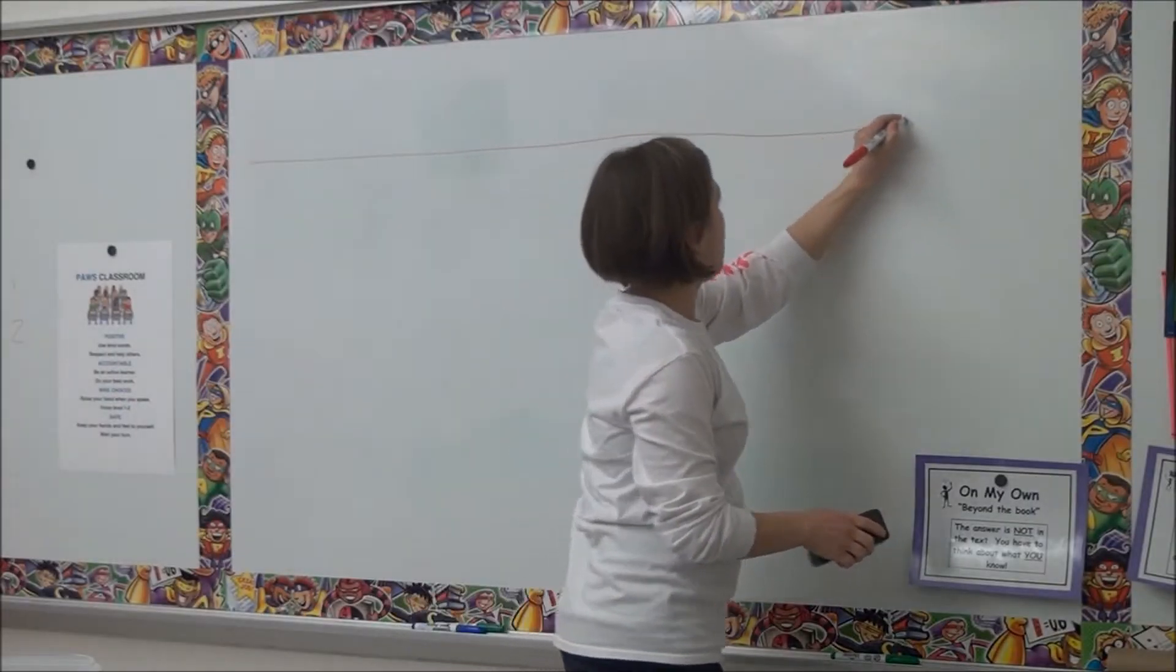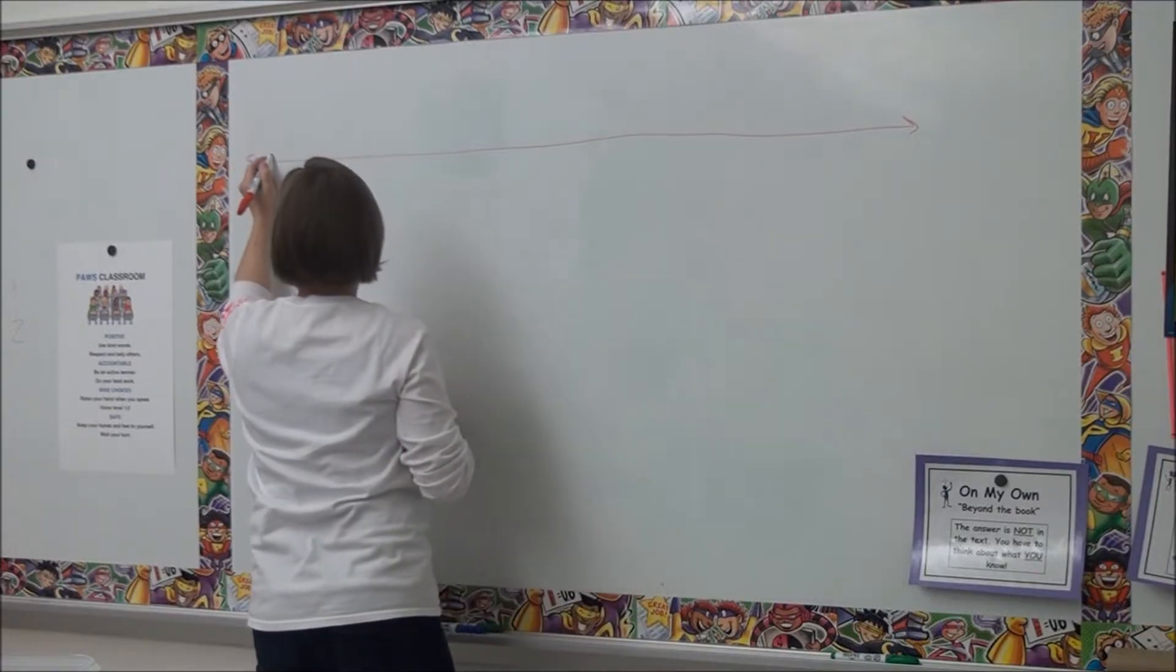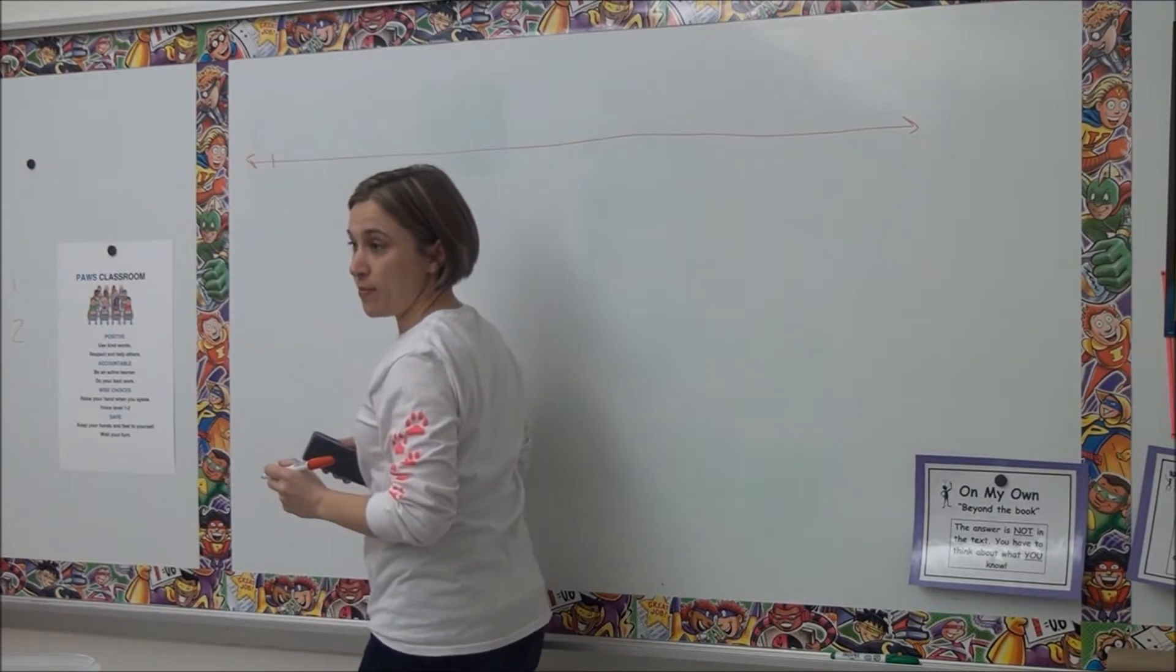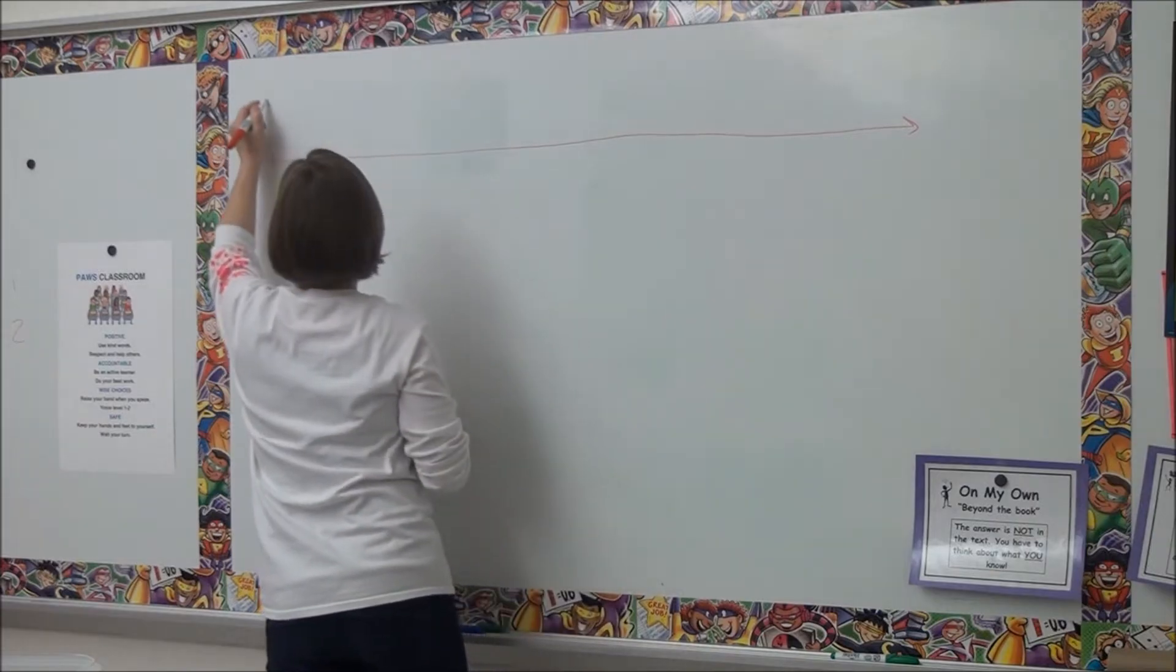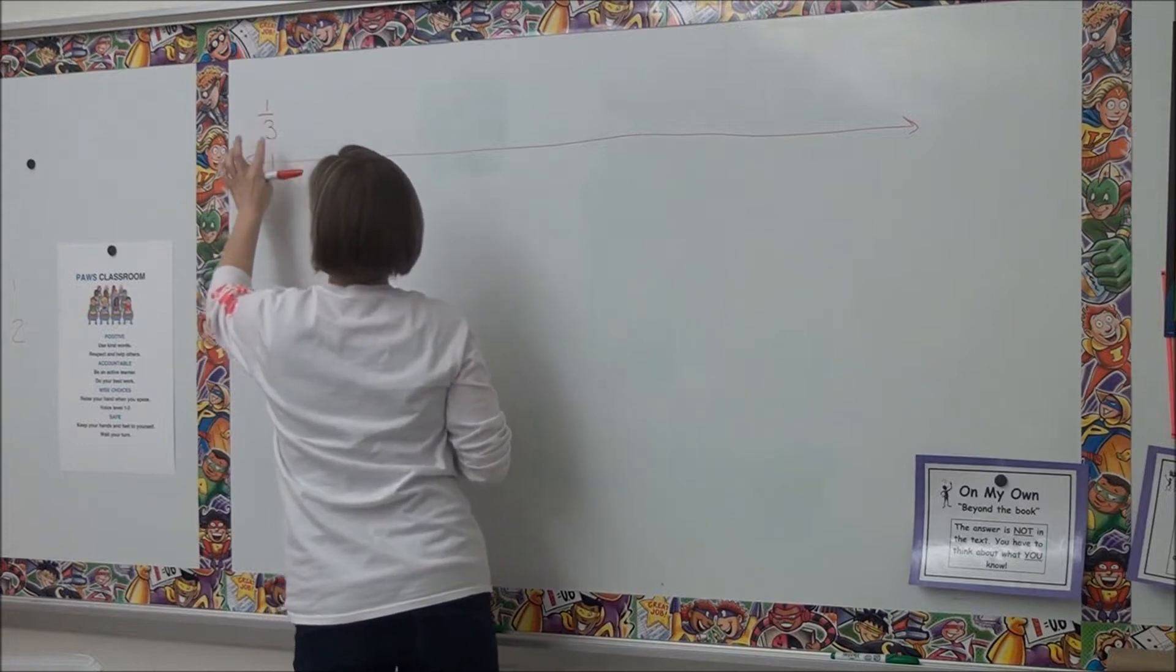Hold on, so let me get a line drawn. We're going to count on this number line. And when we start counting, it's going to look like this. Wouldn't I say we're counting by? One-thirds. We're counting by thirds.